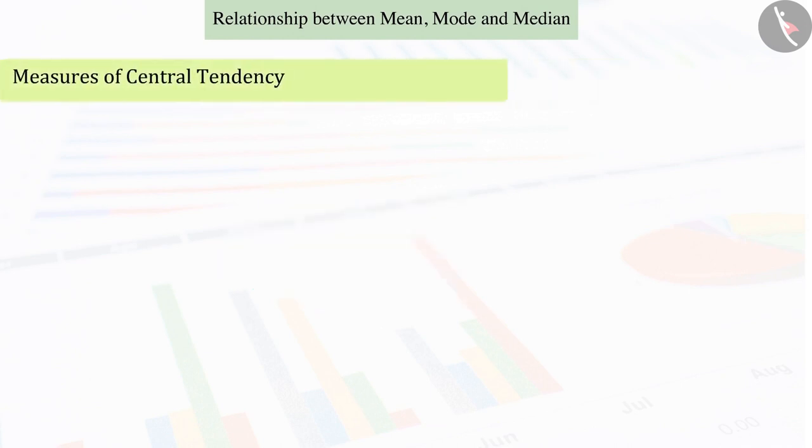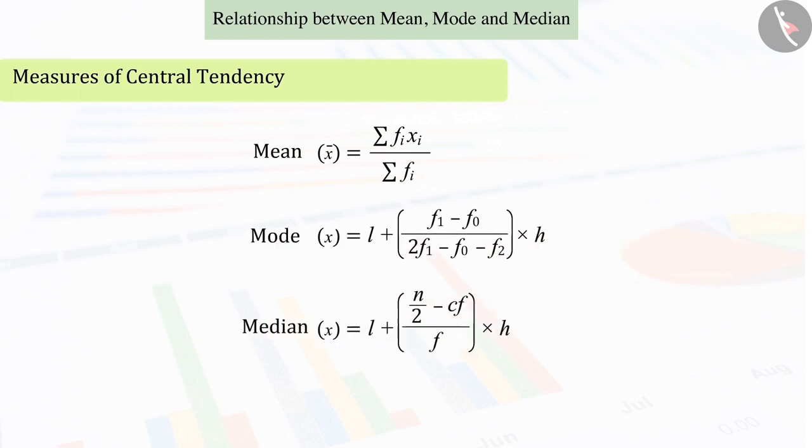We have so far learned about the measures of central tendency of grouped data, that is, the mean, the mode and the median separately, whose values are almost equal to each other.